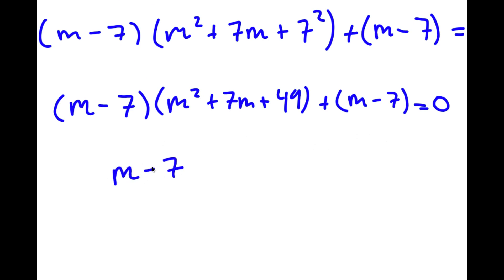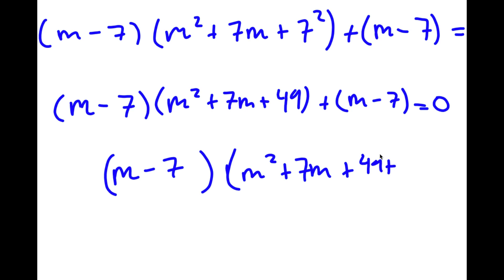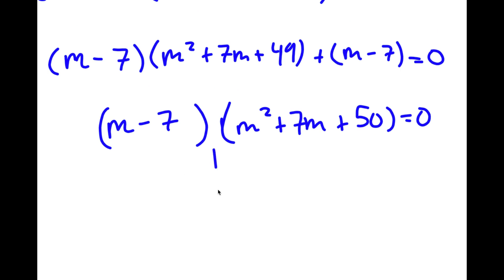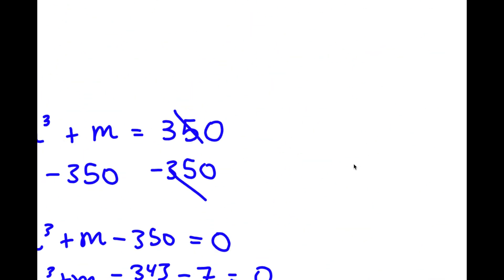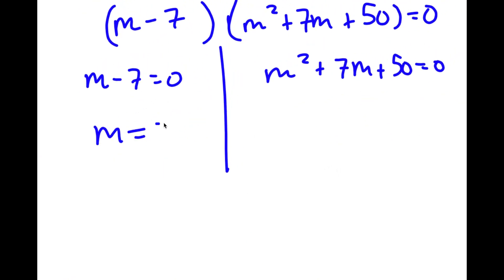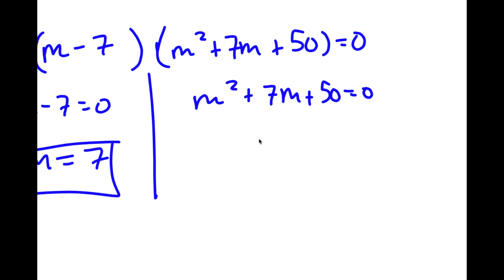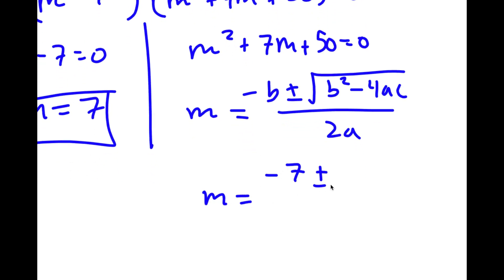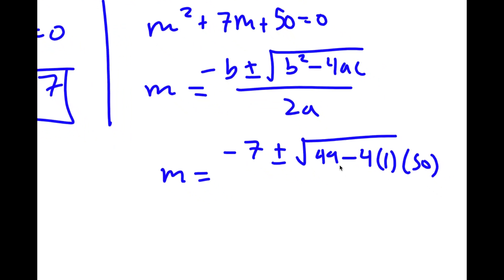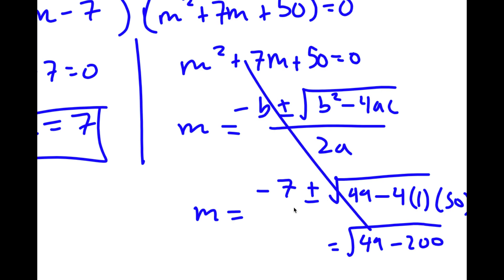If I factor out m minus 7, I have m minus 7 times m squared plus 7m plus 49 plus 1, which is equal to 50, all equal to 0. So this gives me two equations: m minus 7 equals 0, and m squared plus 7m plus 50 equals 0. From the first equation, m equals 7. For the second, using the quadratic formula — negative b plus or minus the square root of b squared minus 4ac all over 2a — I get negative 7 plus or minus the square root of 49 minus 200, which is a negative number under the radical, so no real solutions. Therefore my only solution is m equals 7.